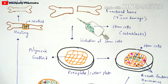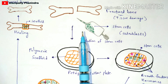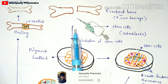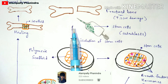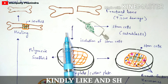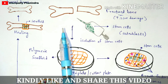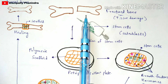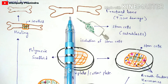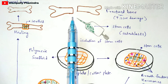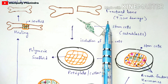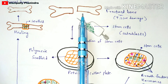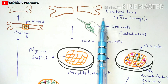The first step in the procedure is to select a patient. In this case, we take a patient whose bone has been fractured. This fractured bone is called a tissue damage, because the bone is a tissue and since it got fractured, it is considered damaged.